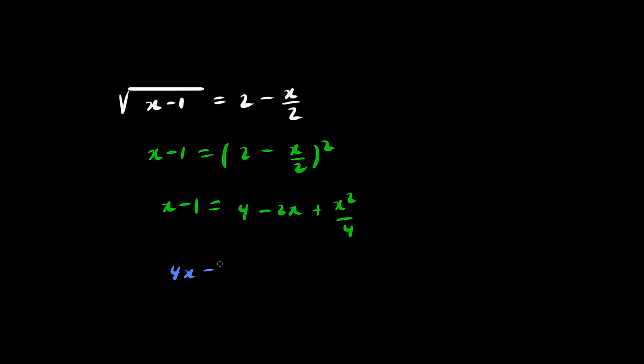So we have 4x minus 4 equals 16 minus 8x plus x squared. We'll throw everything to the right. So we have x squared minus 8x minus 4x is minus 12x, and 16 plus 4 is plus 20.